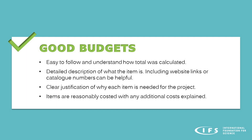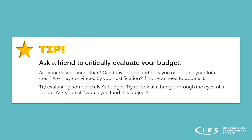In general, good budgets are easy to follow and one can understand how the total cost was calculated for each item. It should include a short but detailed description of what the item is — including a website link or catalogue number can be very helpful. It should clearly justify why each item is needed for the project, and the items should be obviously reasonably costed with any additional costs explained. A tip to improve your budget is to ask a friend to critically evaluate it, considering whether your descriptions are clear, whether they can understand how you reached your total cost, and whether they are convinced by your justification. You can also try evaluating someone else's budget, looking at it through the eyes of a funder and asking yourself: would you fund this project?